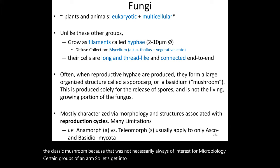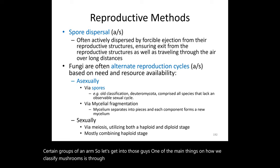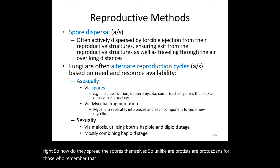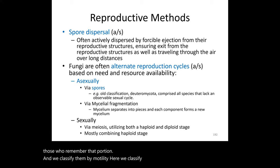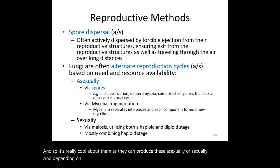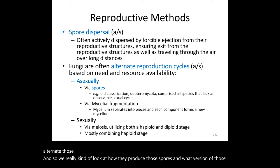One of the main ways we classify fungi is through how they produce and disperse their spores. Unlike protists, which we classified by motility, fungi are classified by the shape and form of their spore dispersal. They can produce spores both asexually and sexually, and some can alternate between both stages.